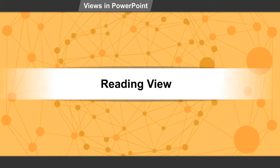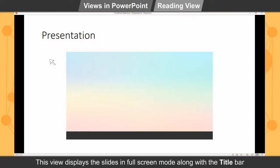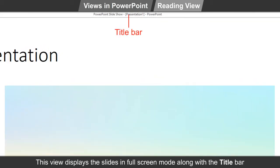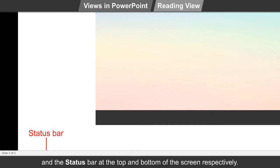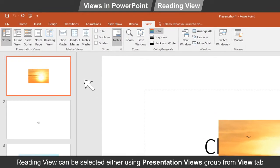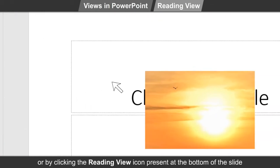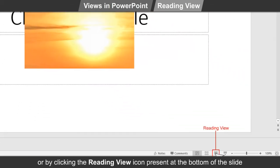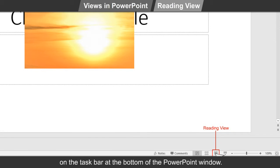Reading view. This view displays the slides in full screen mode along with the title bar and the status bar at the top and bottom of the screen respectively. Reading view can be selected either using the Presentation Views group from the View tab, or by clicking the Reading View icon present in the taskbar at the bottom of the PowerPoint window.